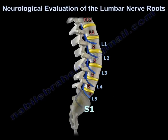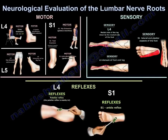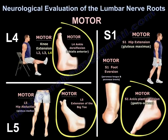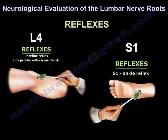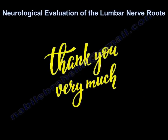To summarize, the three important nerve roots are L4, L5, and S1, and we check sensory, motor, and reflexes for each. For motor: L4 is ankle dorsiflexion; L5 is big toe extension or hip abduction (gluteus medius and minimus); S1 is ankle plantar flexion. For sensation: medial side of the foot is L4; top of the foot is L5; lateral side of the foot is S1. For reflexes: patellar reflex is mainly L4; ankle reflex is S1. Thank you very much, I hope that was helpful.